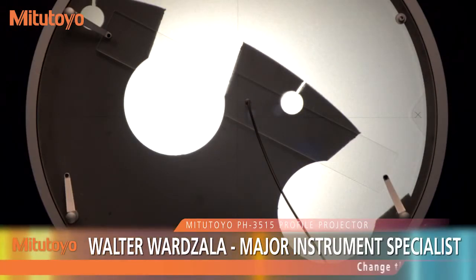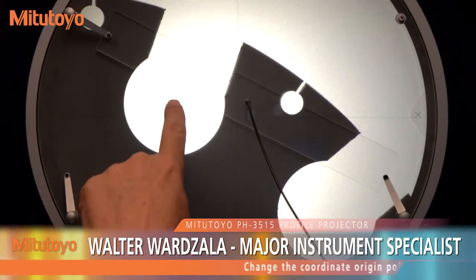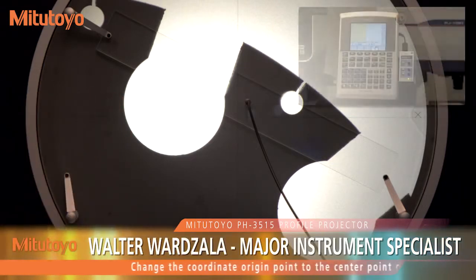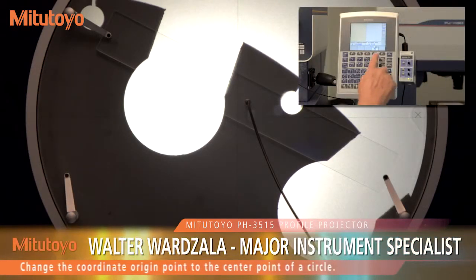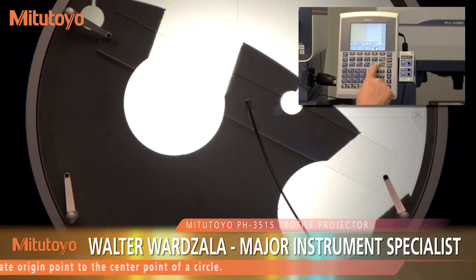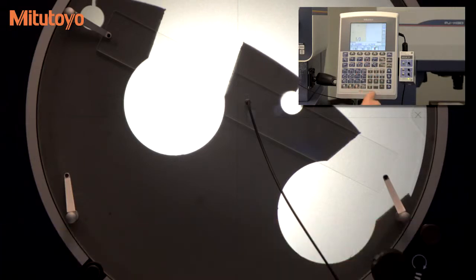To align a coordinate system to your part, rather than having to align the part to the coordinate system, use the basic commands to find the point or angle or line that you want to use to align your new origin.